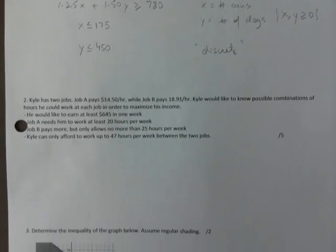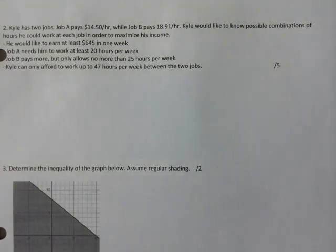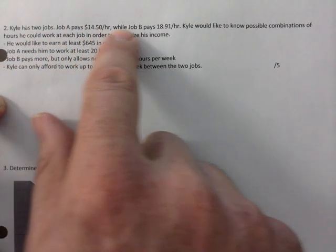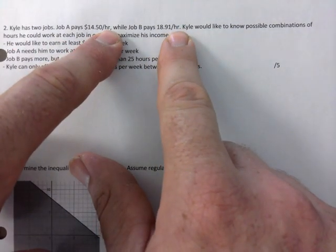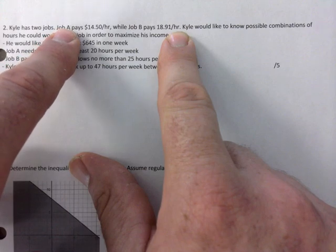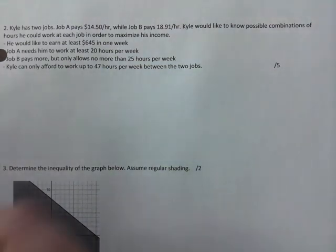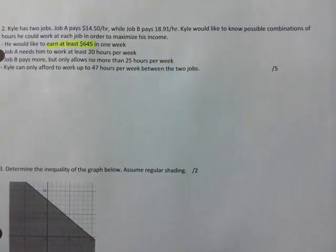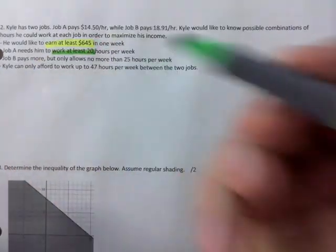Next: two jobs. Something like this was on the quiz. This will be continuous. Job A pays this much an hour, job B pays that much per hour, so x and y will be hours at job A and hours at job B. You'd like to earn at least $645 a week — that's a combination of the two jobs. Work at least 20 hours per week — that's another inequality.